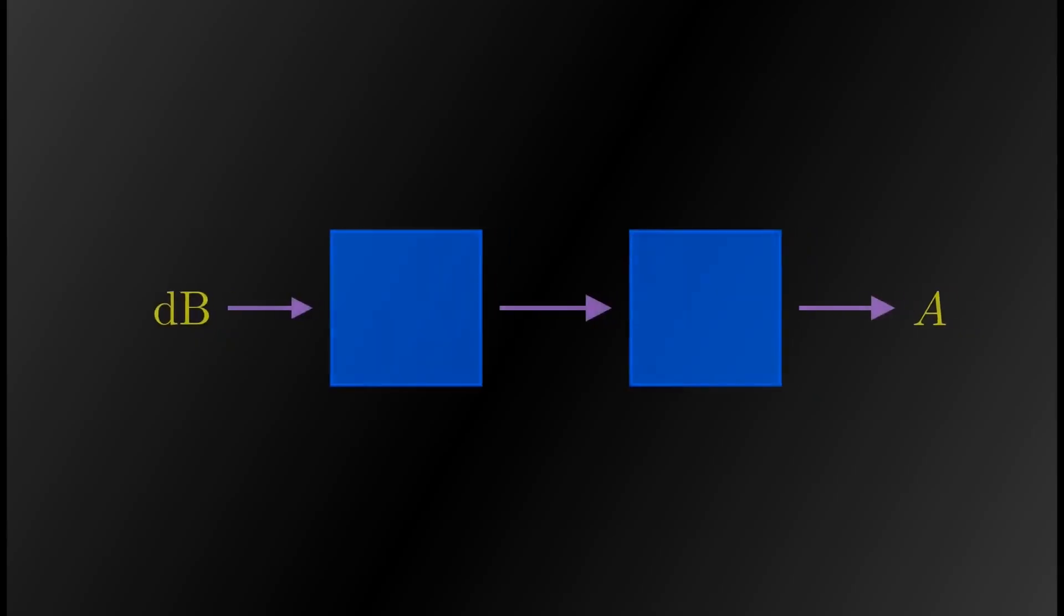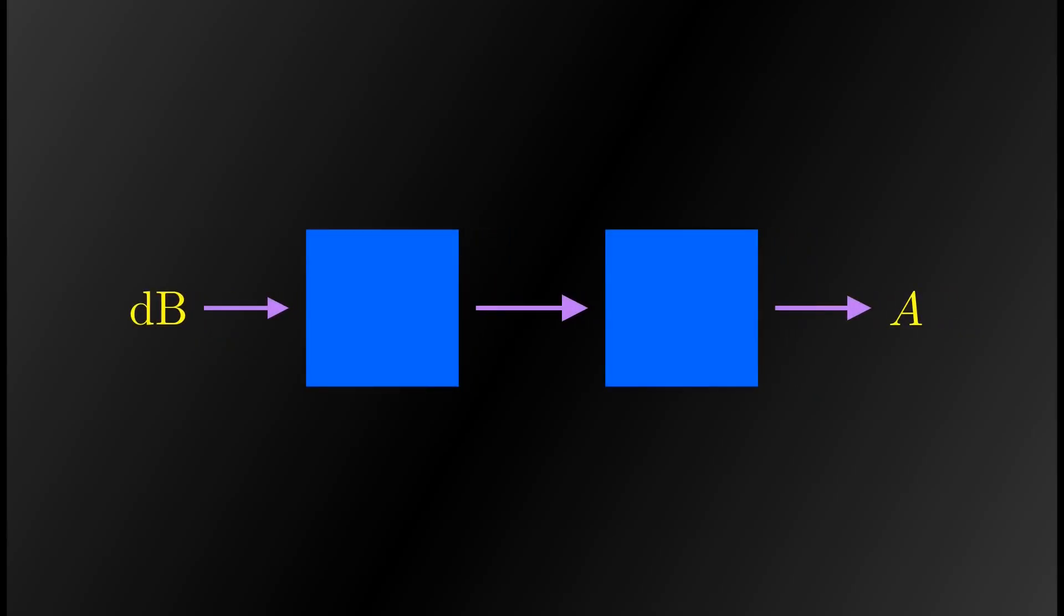One last step before signal reconstruction is converting the amplitude scale from dB to linear scale. The formula is simple. Here's how to understand it. Divide the dB value by 20, then use the result as the power of 10.